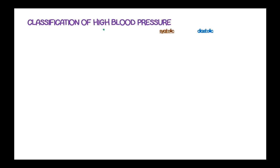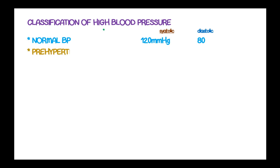Blood pressure can be classified into various levels. Normal blood pressure is 120 mmHg systolic over a diastolic blood pressure of 80 mmHg. In pre-hypertension or elevated blood pressure, the systolic blood pressure is between 120 to 129 and diastolic blood pressure of more than 80.